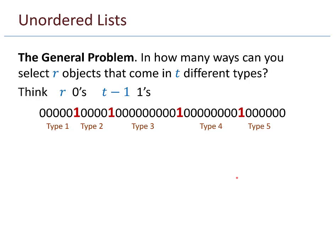So if I have five types, for example, I'll need four ones. So I have r zeros and t minus 1 ones. So the full length of this bit string is r plus t minus 1. And the number of ones is t minus 1. And so my solution to this general bag problem, the unordered lists, is r plus t minus 1 choose t minus 1.